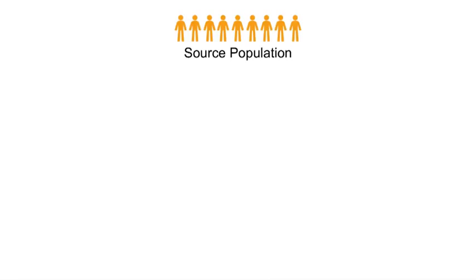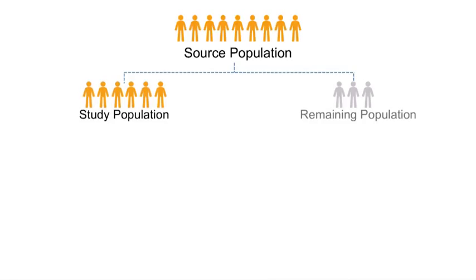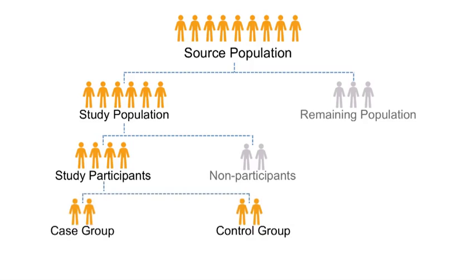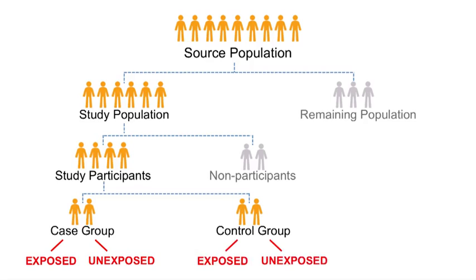The investigator selects the study population from the source population, and the study population is divided into participants and non-participants. The case group and the control groups are chosen from the study participants. Therefore, the total number of exposed persons in a case control study is not the same as the total number of exposed persons in the source population, and the same holds true for the non-exposed. Thus, the denominators in a case control study do not represent the total number of exposed and non-exposed persons in the source population. The denominator is the number of controls, and we can use this information to create a 2x2 table to help determine the odds ratio.